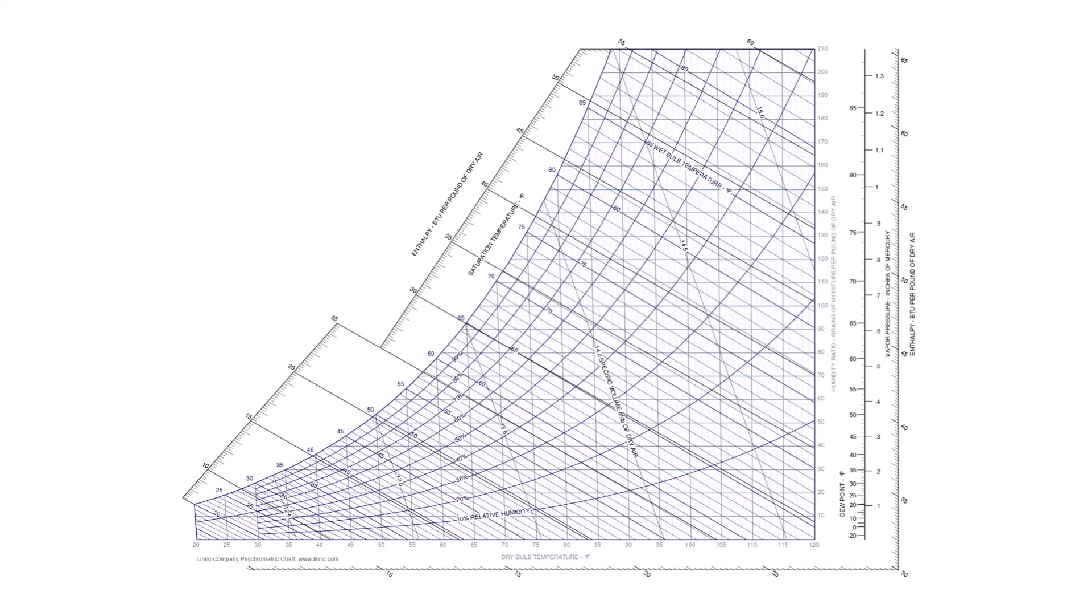So let's say we have 75 degree dry bulb temperature and 65 degree wet bulb temperature. We can see that puts us just under 60 percent relative humidity, let's call it 59 percent. And then if you go over to this side, you can see it's between 70 and 80 grains per pound, so about 76 grains per pound.